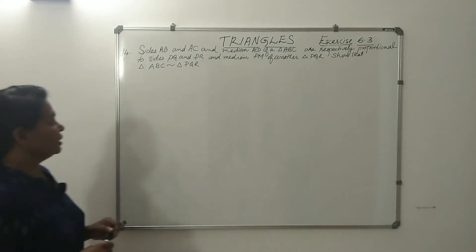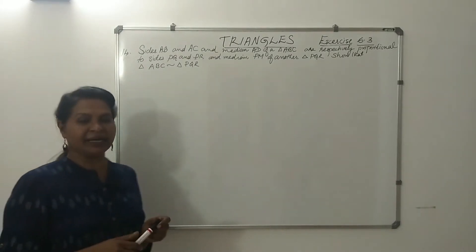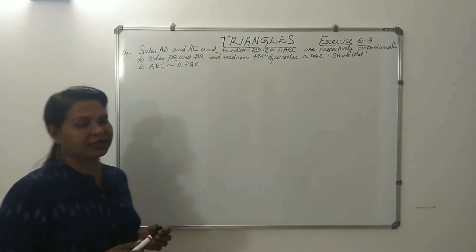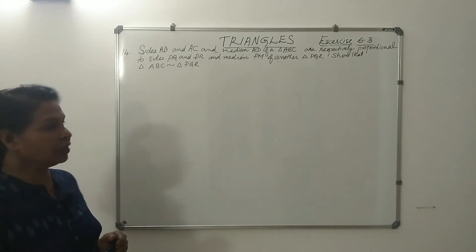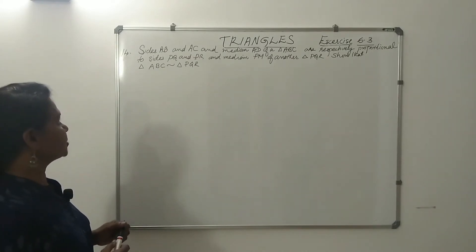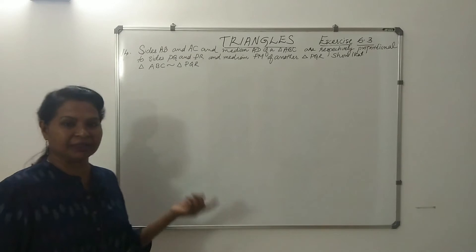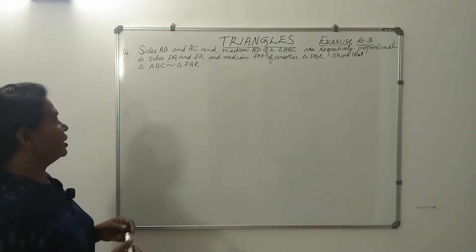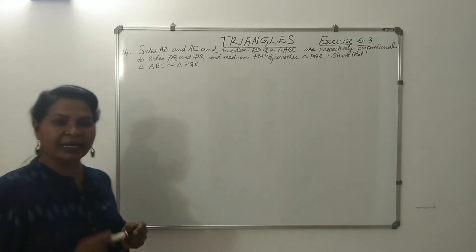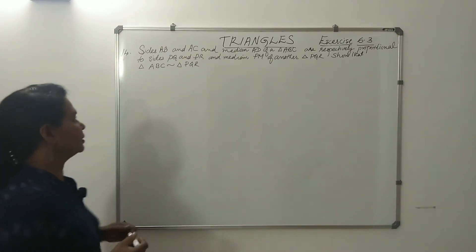Side AB and AC and median AD of a triangle ABC are respectively proportional to sides PQ, PR and median PM of another triangle PQR. Show that triangle ABC is similar to triangle PQR.